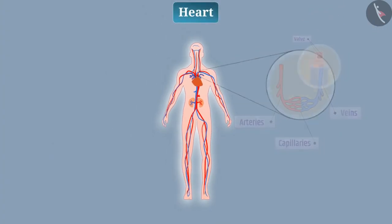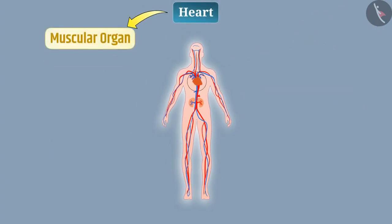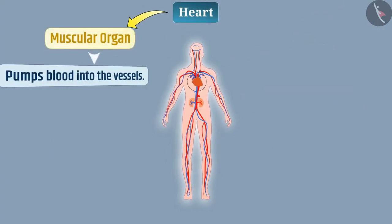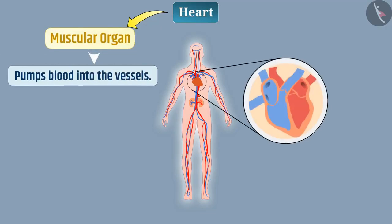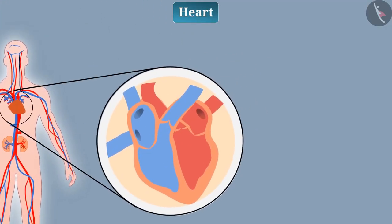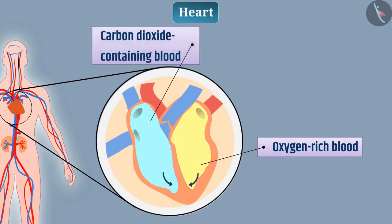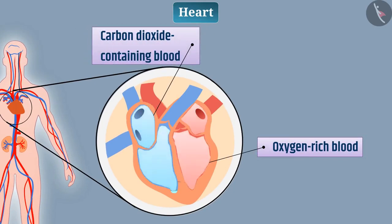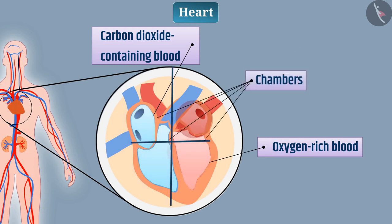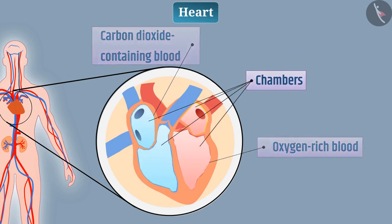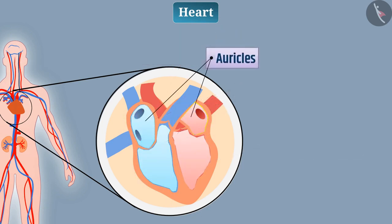The heart is a muscular organ that pumps blood into the vessels. To prevent mixing of oxygen-rich blood and carbon dioxide-containing blood, the human heart is divided into four chambers. The upper two chambers are called auricles and the lower two are called ventricles.